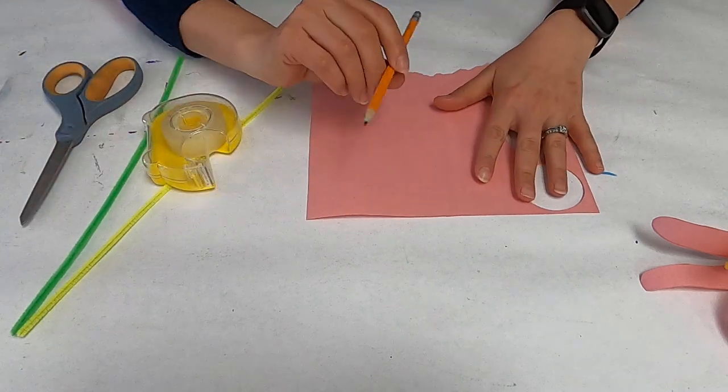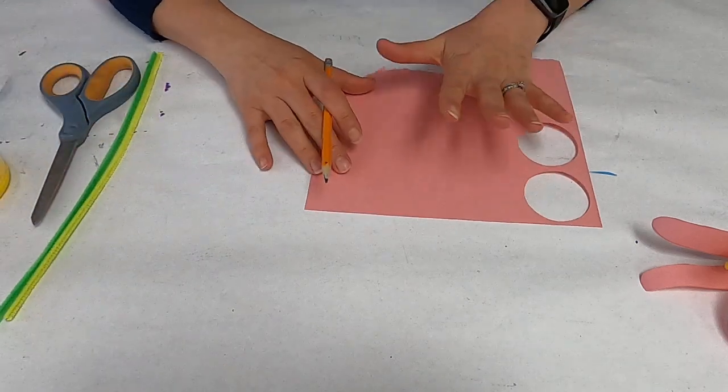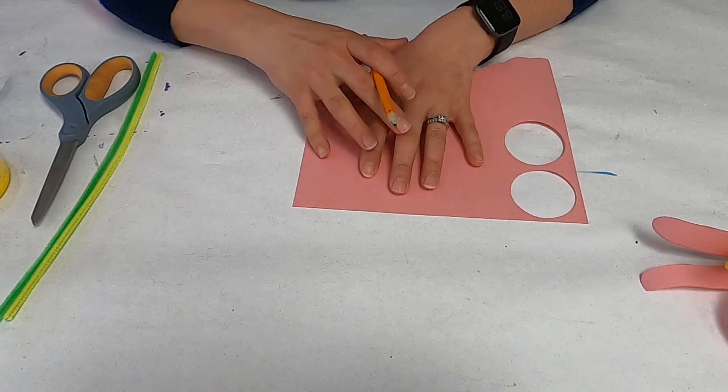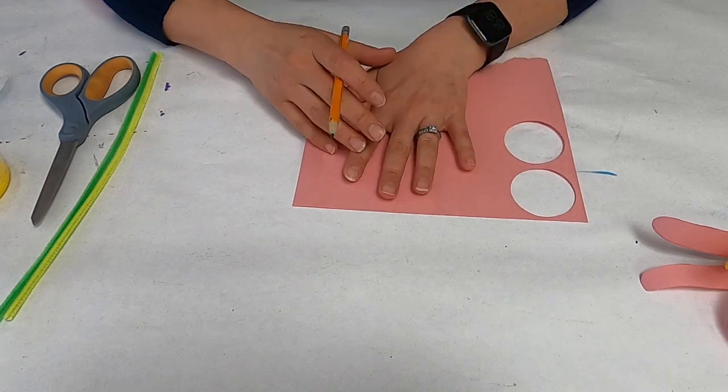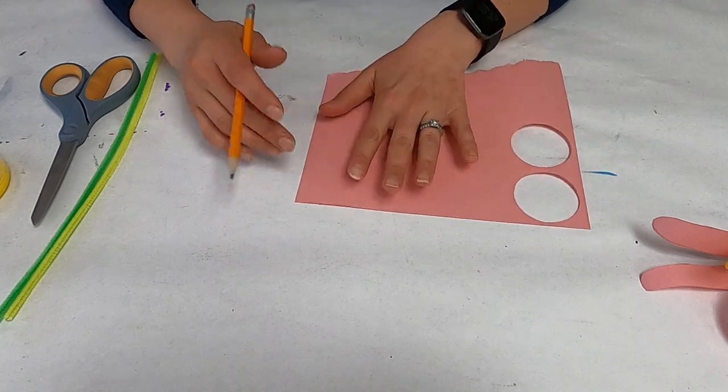You just take, and if you want to make multiple lilies, you can fold the paper in half and do this and then cut out two at a time if you want to make a whole bouquet. Otherwise, if you just want to make one, I'll just show you how to do that here.